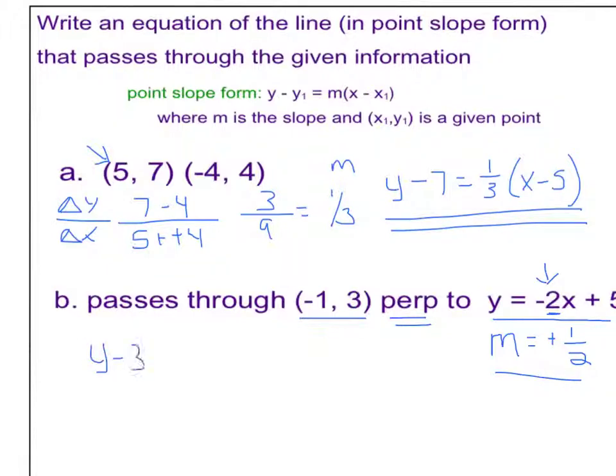So y minus 3, because this is y sub 1, equals my new slope of 1 half times x minus a negative 1, so x plus 1. And again, I am done if I want an equation in point-slope form.